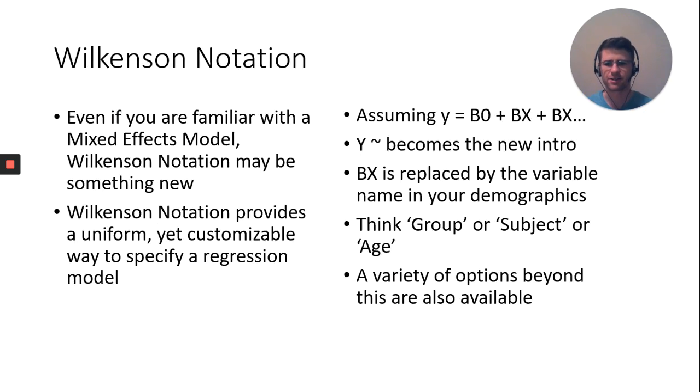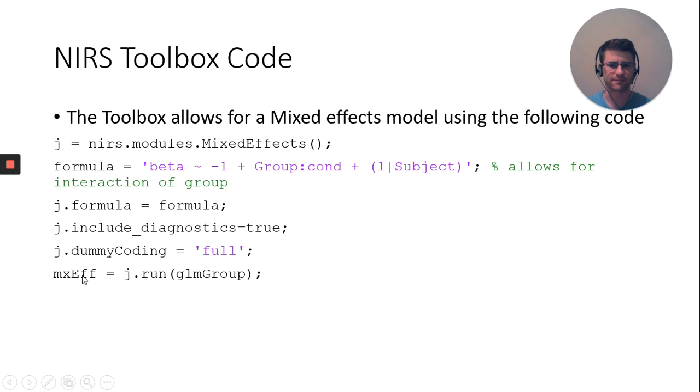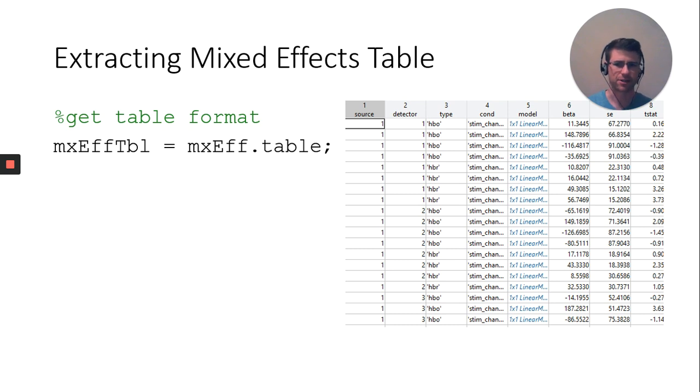Once you run it and extract this mixed effects variable, you may want to look at it. There's a table function. You call your variable, mixed effects dot table. It prints a lovely table with source and detector combination, oxy or deoxy hemoglobin, condition, and what model was used, which is your Wilkinson notation model. You get beta value, standard error, t statistic, and several others cut out of this image like p values, q values, and others.